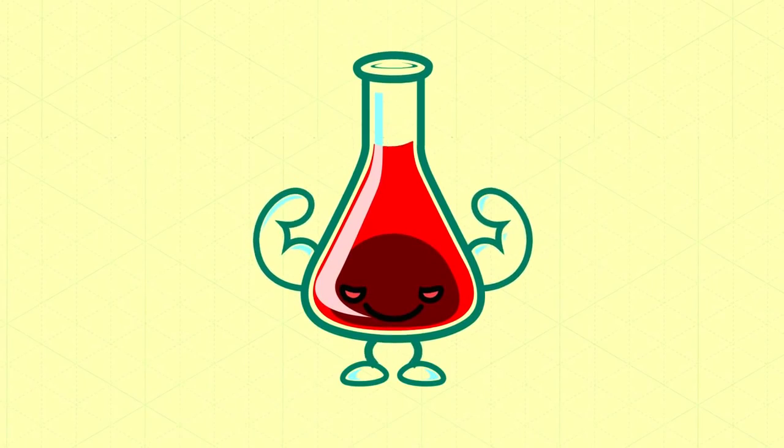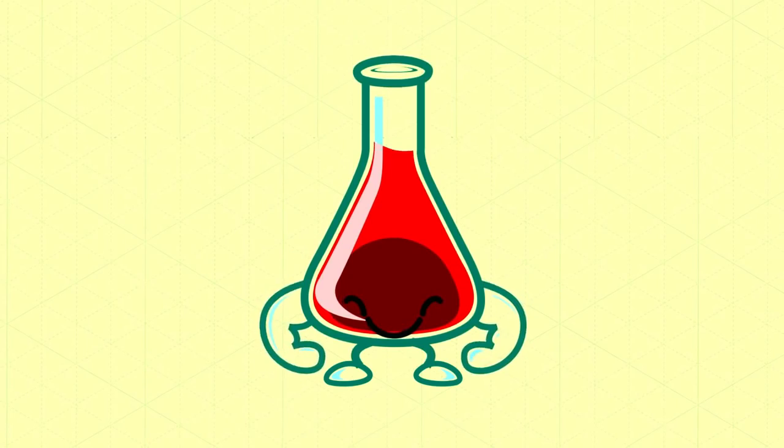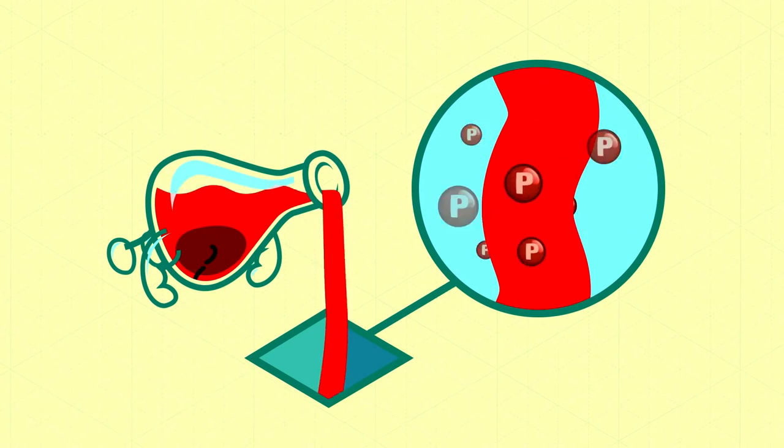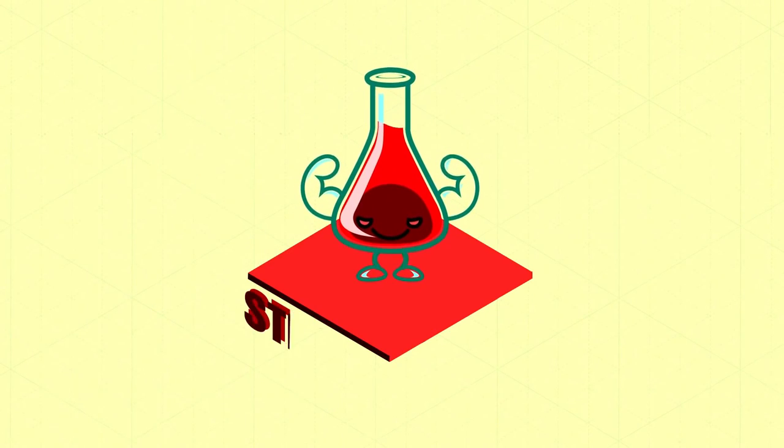Some substances are so aggressive about donating their protons that when they get a chance, all of the molecules in a sample will dump a proton, sometimes more than one, to the surrounding water molecules. We call these strong acids.